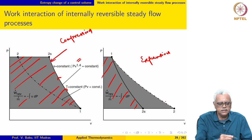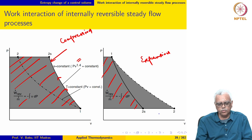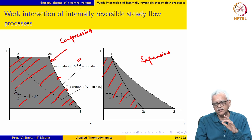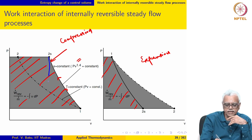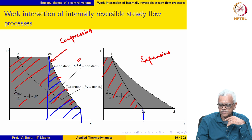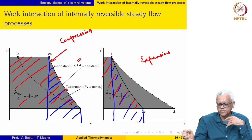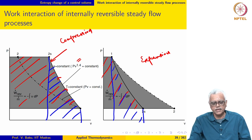To illustrate the same thing for a non-flow process: for a system executing a non-flow isentropic process between the same two states, the work interaction W over M would be given by a different area on the PV diagram. For the steady flow process the area is as shown here, and this is very important to keep in mind — the two areas are distinct.